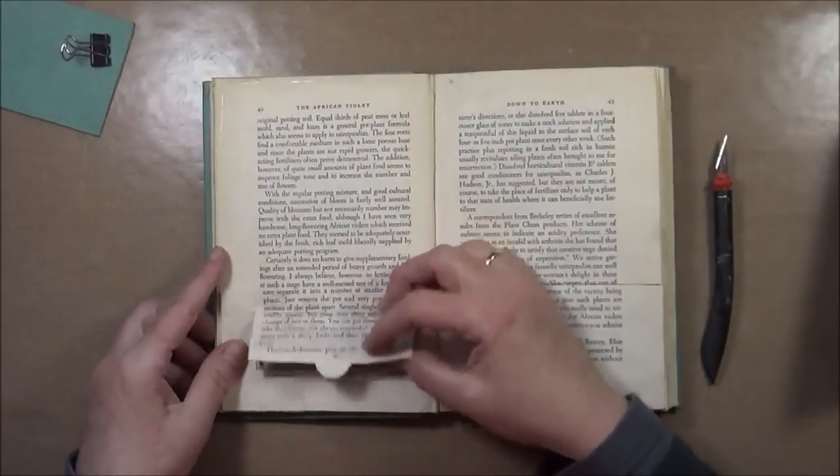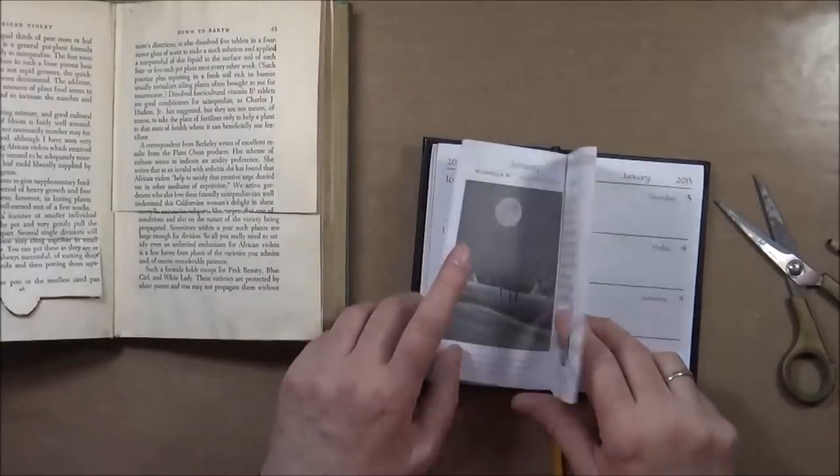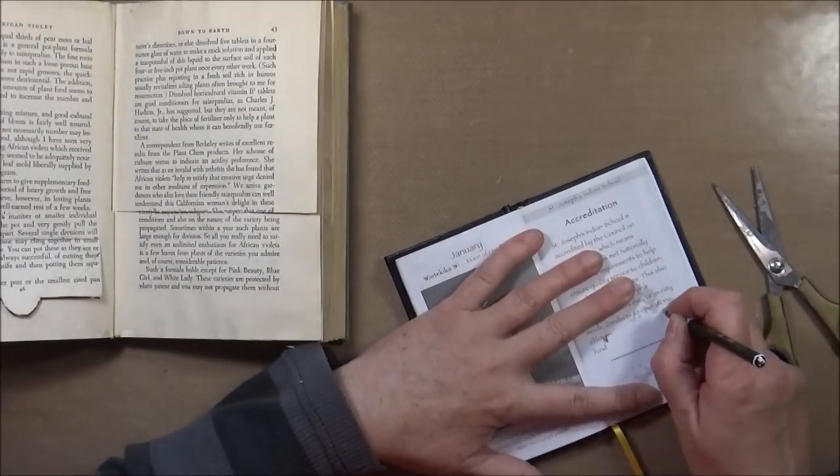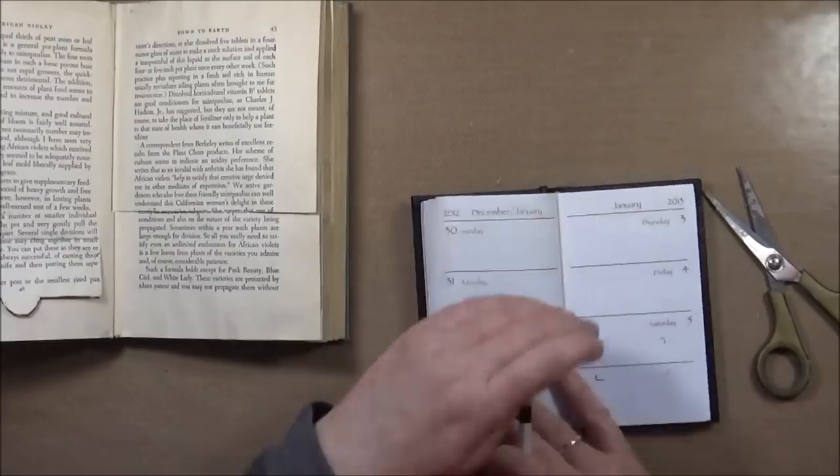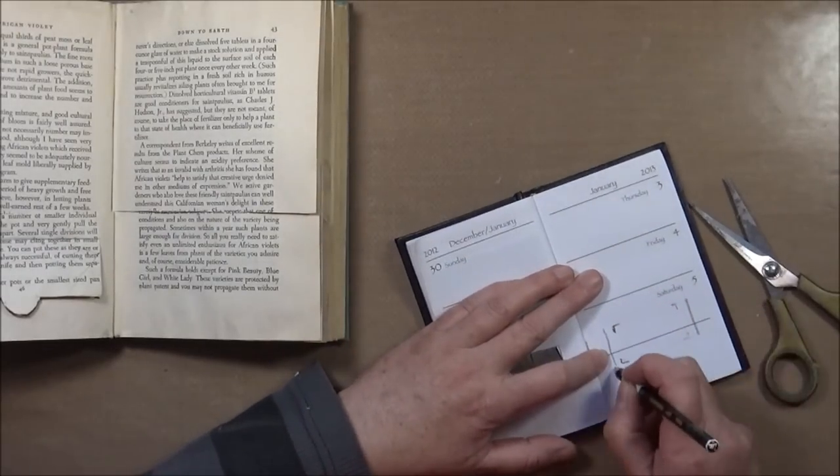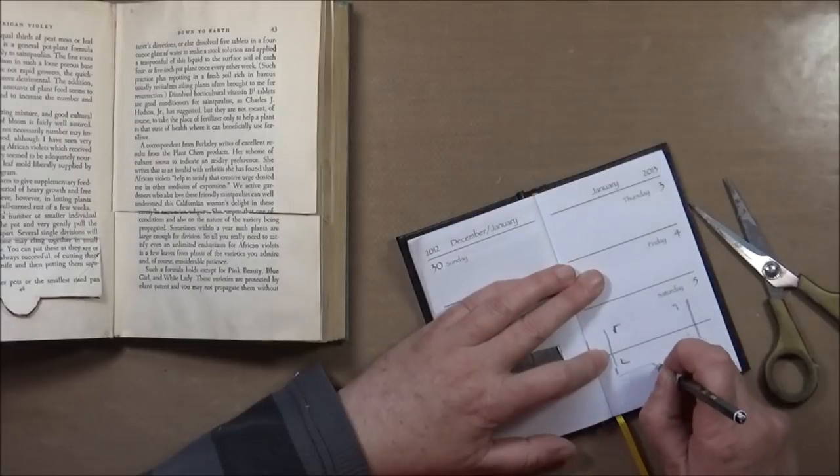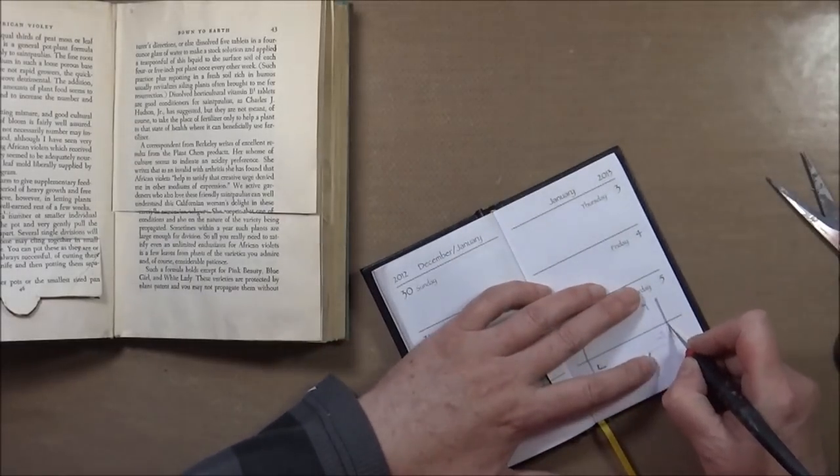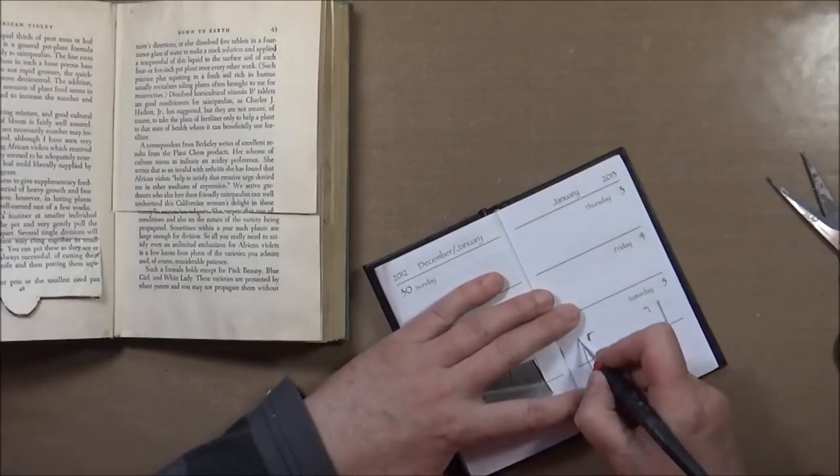So here I'm marking the hole on the next page. Then I draw out the flap, of course, a little bigger than the hole I cut. And then again, with my X-Acto knife, I just cut it out.